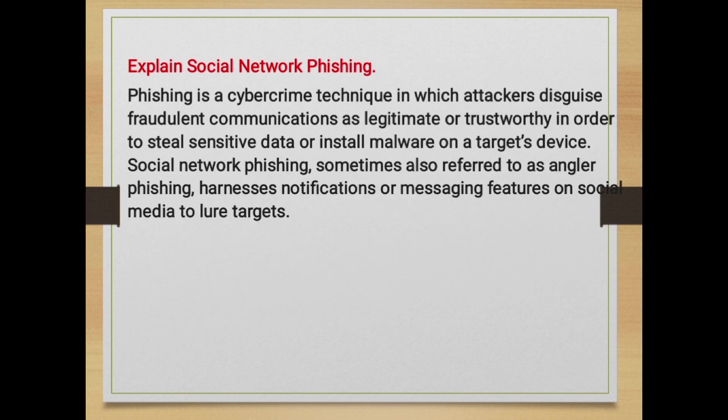Explain social network phishing. Phishing is a cybercrime technique in which attackers disguise fraudulent communications as legitimate or trustworthy in order to steal sensitive data or install malware on a target's device. Social network phishing, sometimes also referred to as angler phishing, harnesses notifications or messaging features on social media to lure targets.